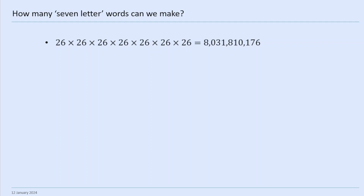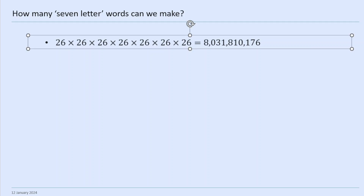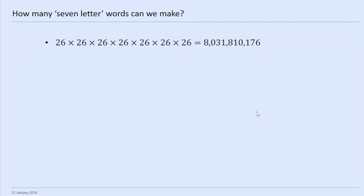The answer is 26 for the first, 26 for the second — 26 times 26 times 26 times 26 — 26 to the power of 7, which is 8,031,810,176. So, quite a lot.